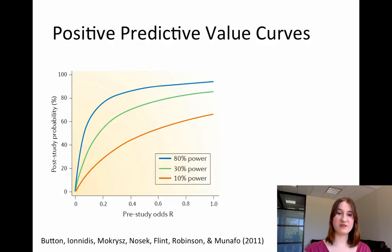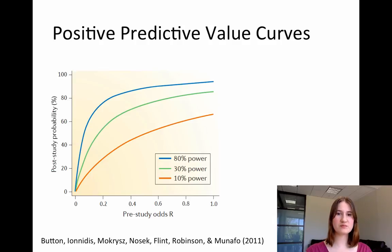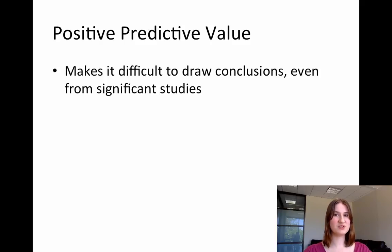This graph shows that across the whole range of pre-study odds ratios, the lower your statistical power, the lower the probability of a statistically significant result representing a true value out there in the population. Basically, underpowered studies make it difficult to draw conclusions even when the study finds statistically significant results, because low power makes it less likely that your statistical result maps onto a true effect.